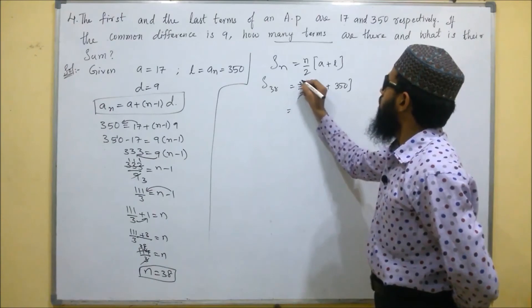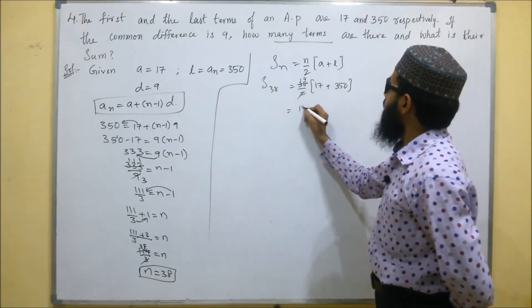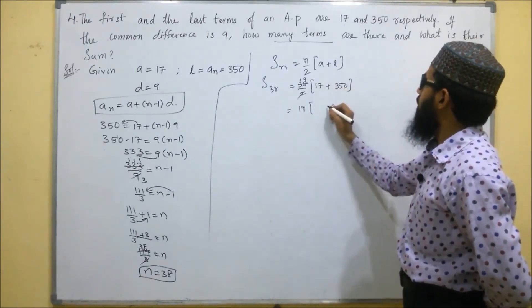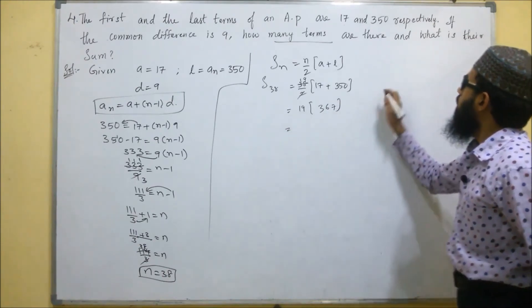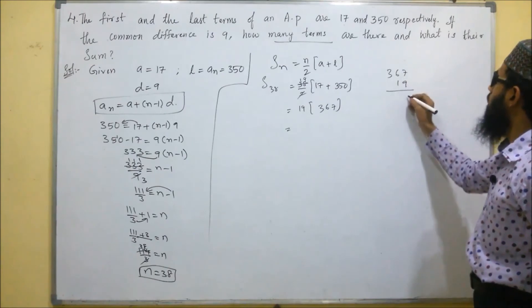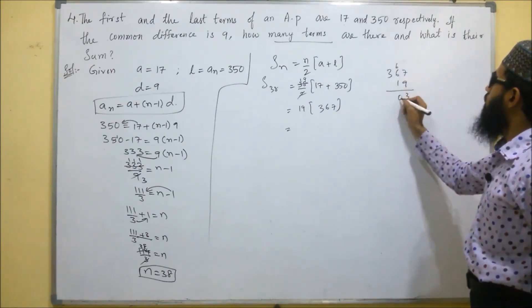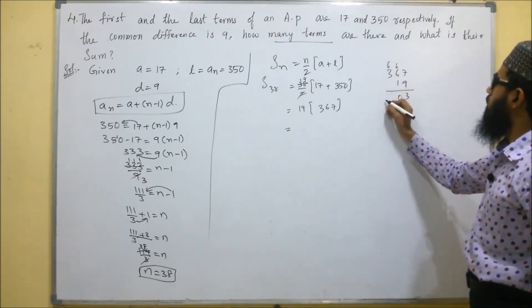19 into 7 plus 0 is 7. 1 plus 5 is 6. 367 into 19. 9, 7's are 63. 9, 6's are 54, that will be 60. 9, 3's are 27 plus 6, 33.